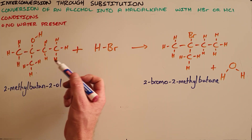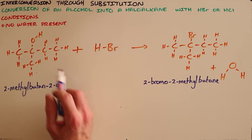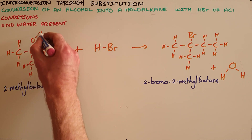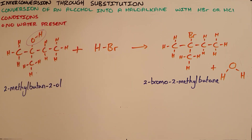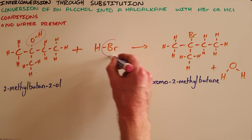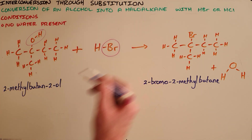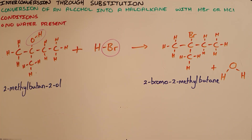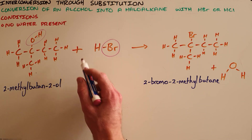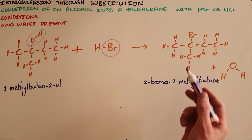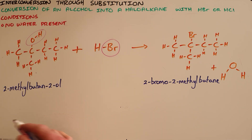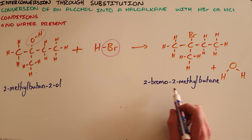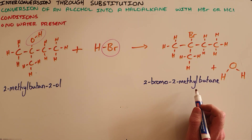What would happen in this interconversion reaction is the hydroxyl group forming that tertiary alcohol would be replaced or substituted with the halogen — in this case bromine — that is attached to the hydrogen, and that takes us from 2-methylbutan-2-ol, the alcohol, to form 2-bromo-2-methylbutane.